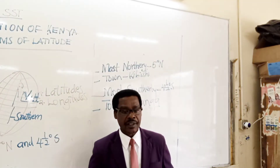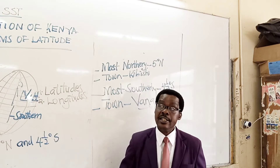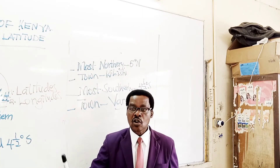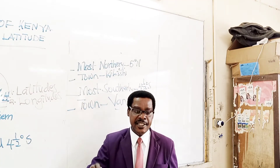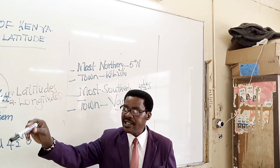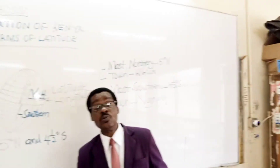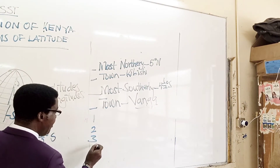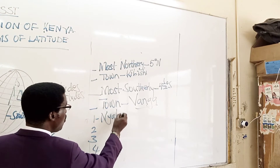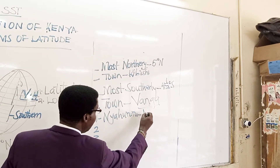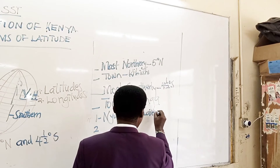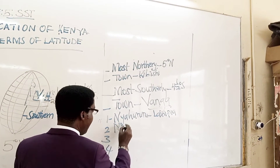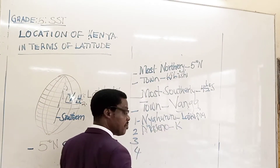Let's look at some of the towns where the equator passes through. Number one, Nyahururu town — Nyahururu is found in Laikipia County. As you travel to Nyahururu, where we see the Thomson Falls, you reach a point where you are told you are now crossing the equator, which is within Nyahururu. Number two, Maseno in Kisumu County — that is also another place where the equator passes through.